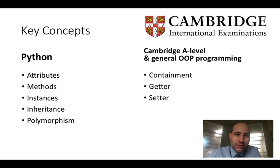What are some of the key concepts that you'll need for the A-level? In Python, and this is just general good Python practice: attributes, methods, instances, inheritance, and polymorphism. These are incredibly useful concepts and the last two take a little bit of getting your head around. The Cambridge A-level requires these, and they are used in other languages, but to be honest in Python they're kind of optional extras in some ways: containment, getters, and setters. We will cover these but I will flag when we're doing things that are a little bit un-Pythonistic.